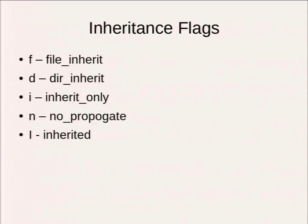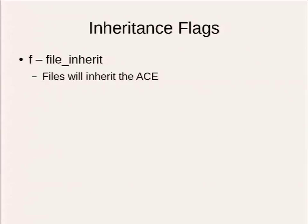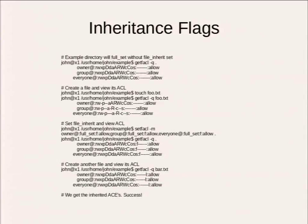The next field is the inheritance flags. 'F' is for file inherit — that means files will inherit that ACL entry. Here's our example directory. I've given this everything. This is where your inheritance flags are and there are none here. I create a new file foo.txt, get the ACL on that file — getting default permissions with no inheritance flags.